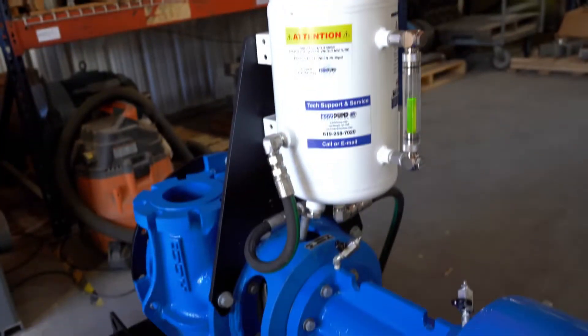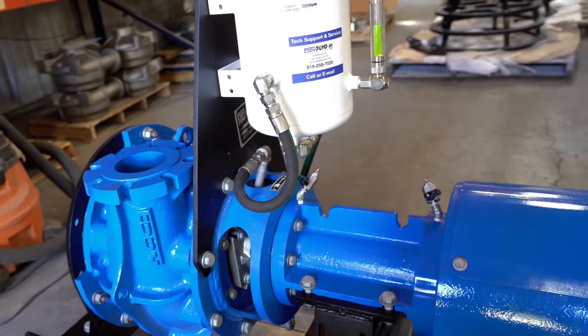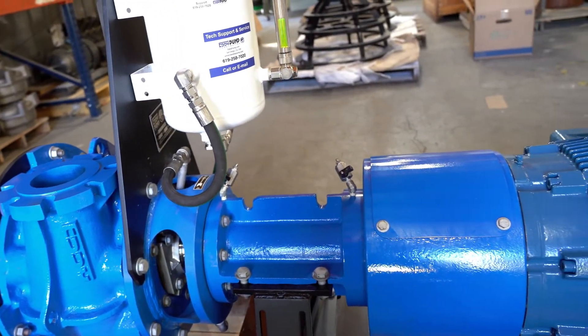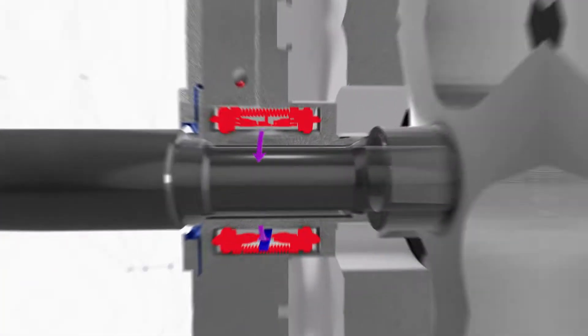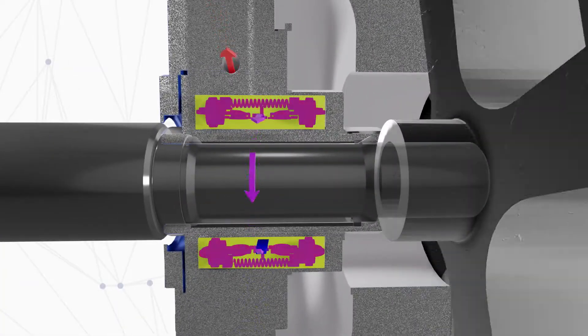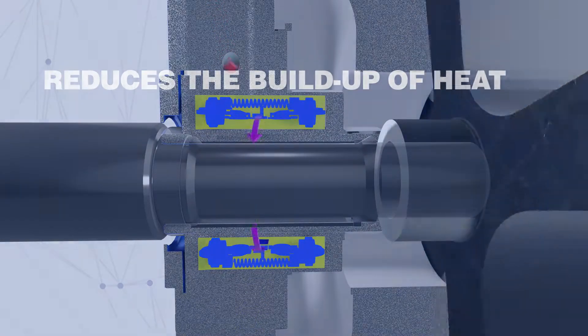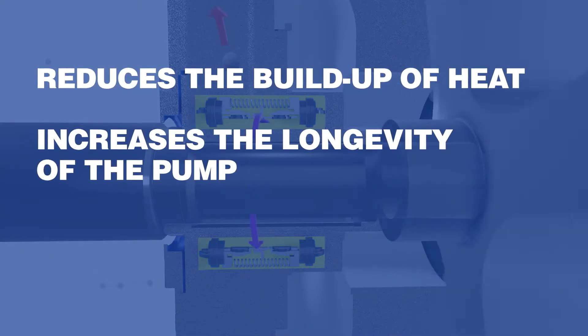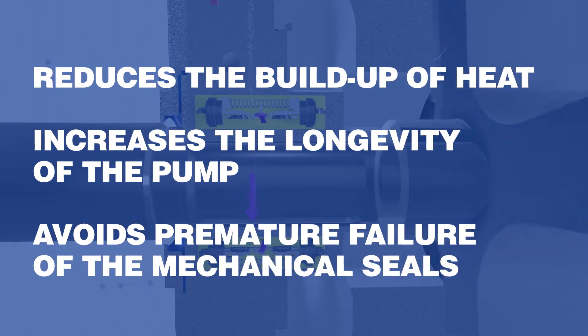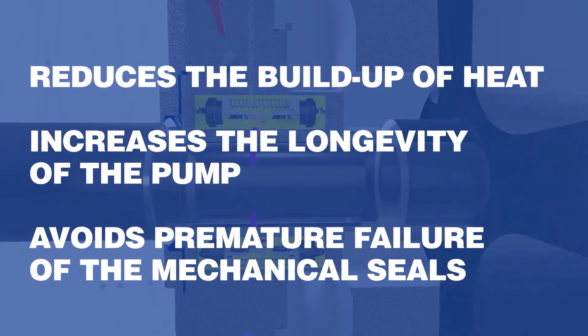A solution to avoiding the overheating of mechanical seals in a rotating industrial pump is a seal support system. Seal support systems are designed to flush the mechanical seal area of the pump with fluid. This flushing action reduces the buildup of heat, increases the longevity of the pump, and avoids premature failure of the mechanical seals due to overheating.